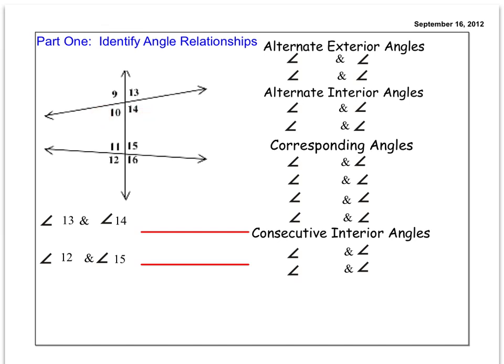You can see there are eight angles labeled 9 through 16 and within those eight we are going to find these different relationships. Let's start with alternate exterior angles. The word alternate means on the opposite sides and exterior means outside. So we're looking for an angle pair that is on alternate sides of this transversal or opposite sides of the transversal and then exterior says they will be outside of these horizontal lines.